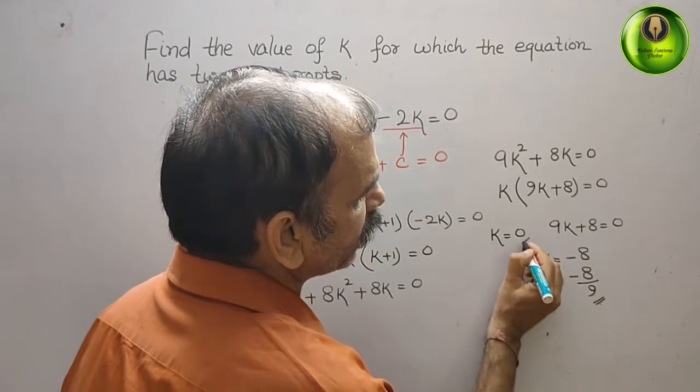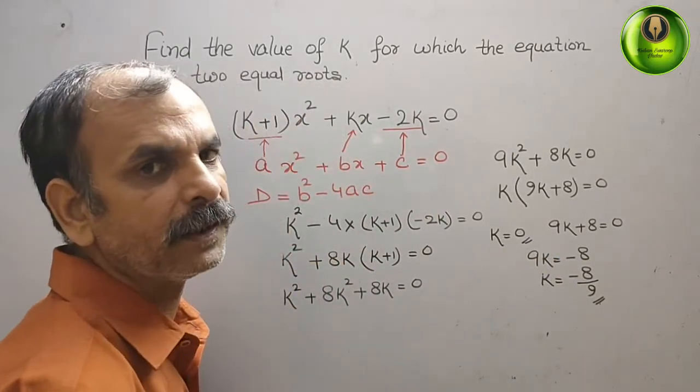So these are your two values: 0 and -8/9.